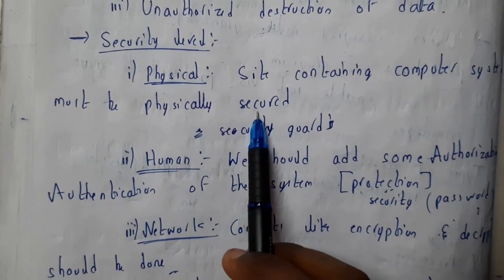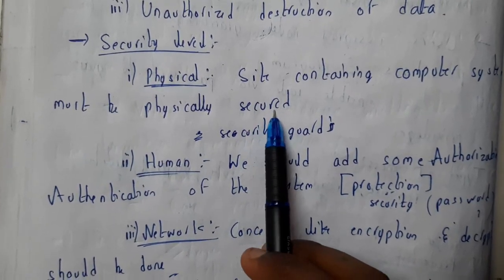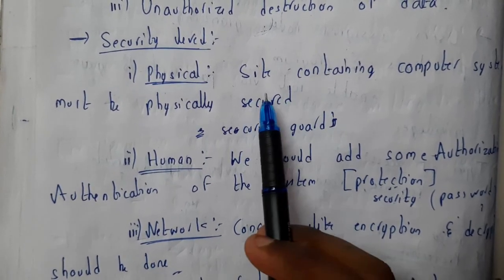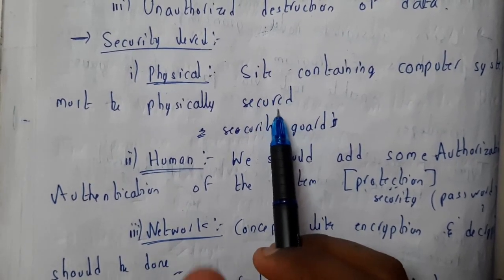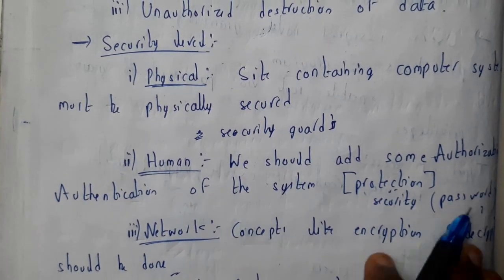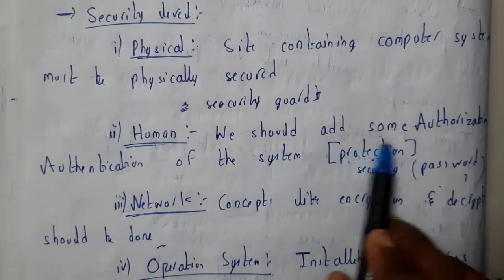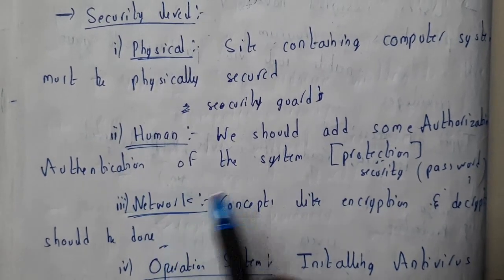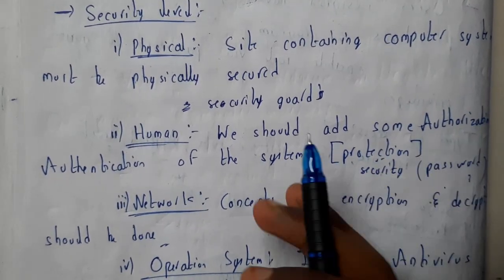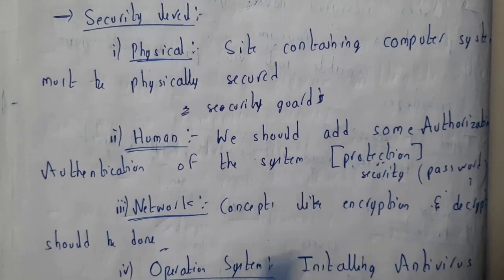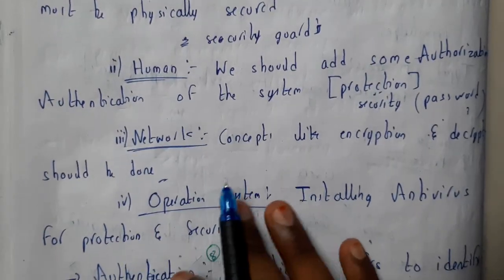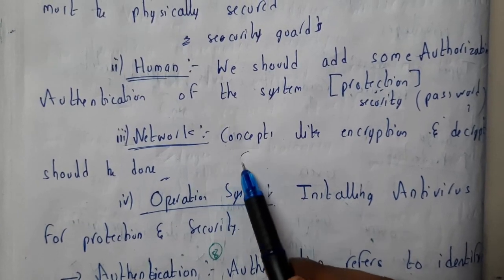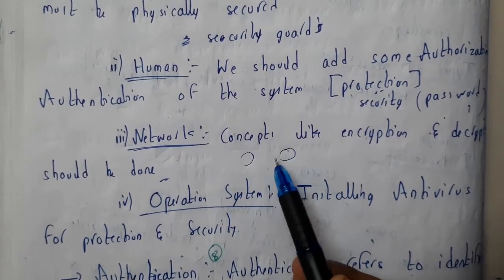Sites containing computer systems must be physically secured. If a system has really important data, you should also secure it physically. The second level is human security — you should add authentications and authorizations, such as password protections, to protect your files.